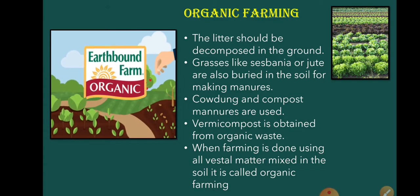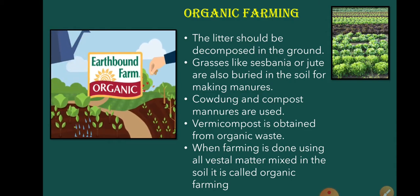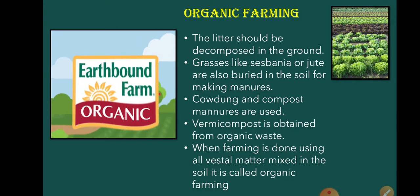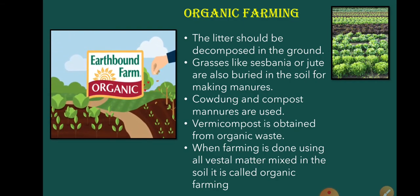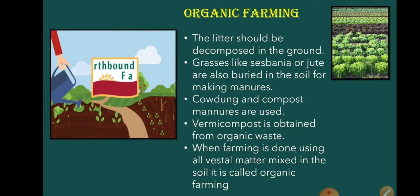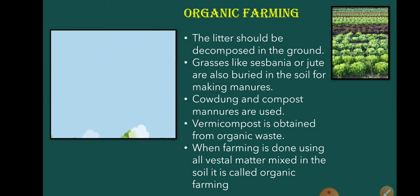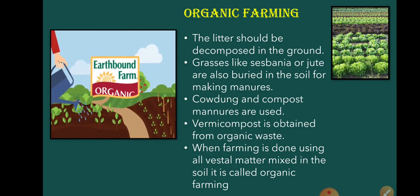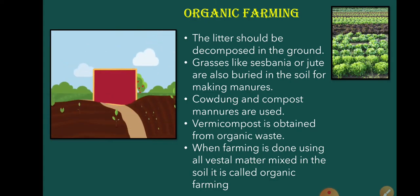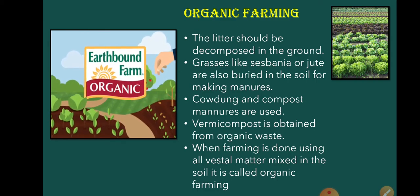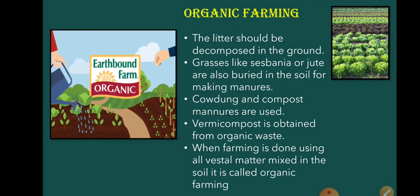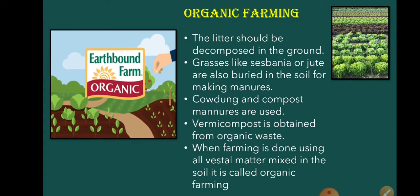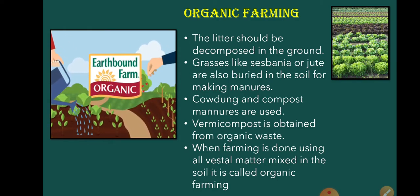The last farming type we need to learn is organic farming. In organic farming, the nutrition required for the crops is fulfilled by organic manure. How is it prepared? Leaf litter is decomposed in the ground. Grasses are buried and formed into good quality manure. Cow dung and compost manure are used. Vermicompost is obtained from organic waste. When farming is done using all vegetative manure — that is, natural things mixed into the soil — it is called organic farming, which is a good type of farming because it does not use chemical pesticides.